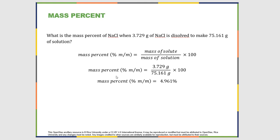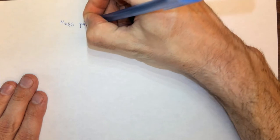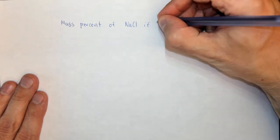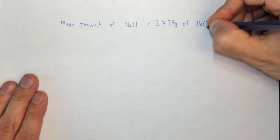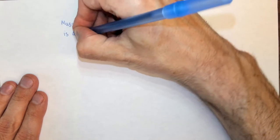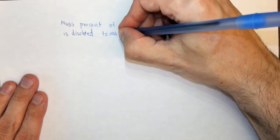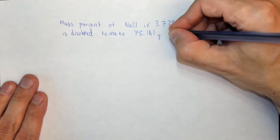We're going to look at a mass percent question. It wants to know the mass percent of NaCl if 3.729 grams of NaCl is dissolved to make 75.161 grams of solution.